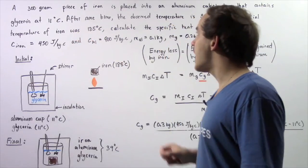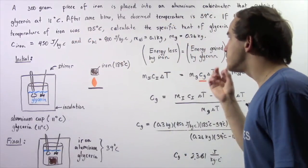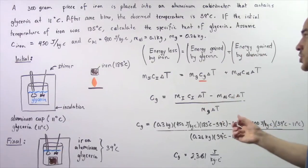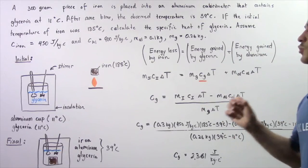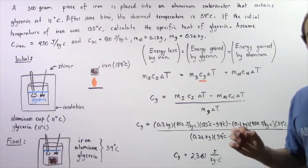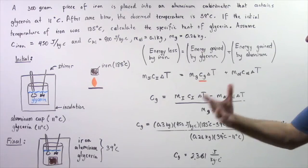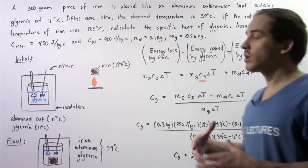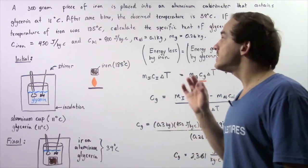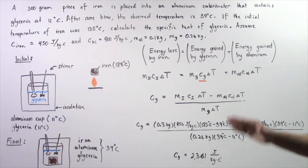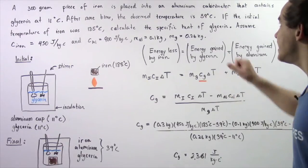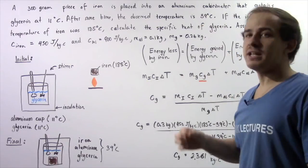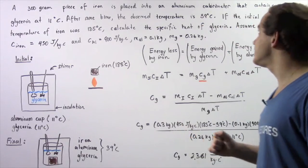Now, after some time, the observed temperature — the final temperature of our system — is 39 degrees Celsius. So after we place our iron, the temperature of the glycerin, the aluminum, and the iron is 39 degrees Celsius.